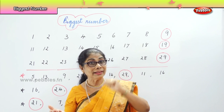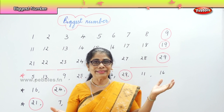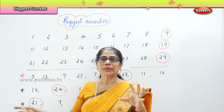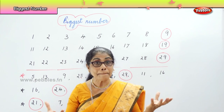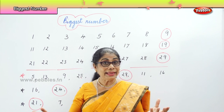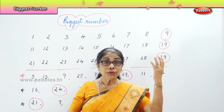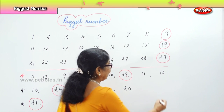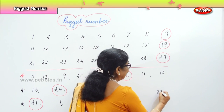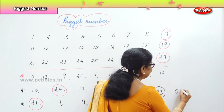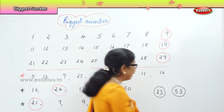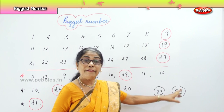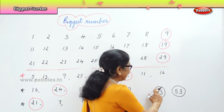Supposing I give you two numbers — identify the biggest. Thirty-one and fifty-one: three and one versus five and one. Which is the biggest? Definitely fifty-one. Now identify the big number between twenty-three and fifty-three. The first number of twenty-three is two; the first number of fifty-three is five. So fifty-three is the biggest number.